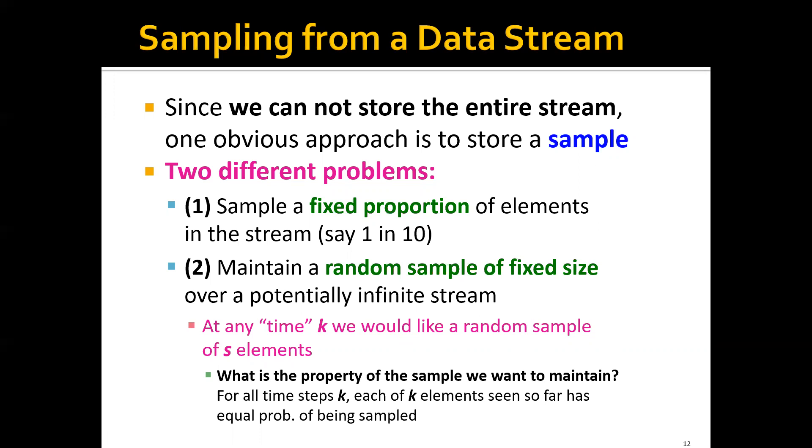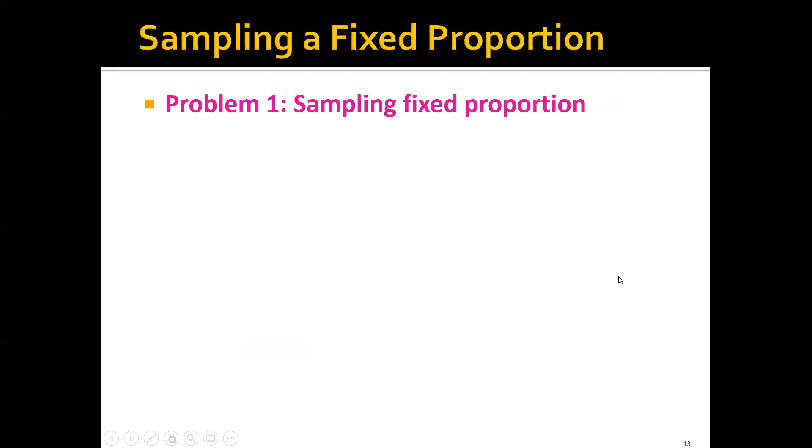What's the property of the sample we want to maintain? Basically, we want a property such that for every time step k, each of the k elements seen so far has equal probability of being sampled. Now let's start with the first problem, which is sampling fixed proportion.